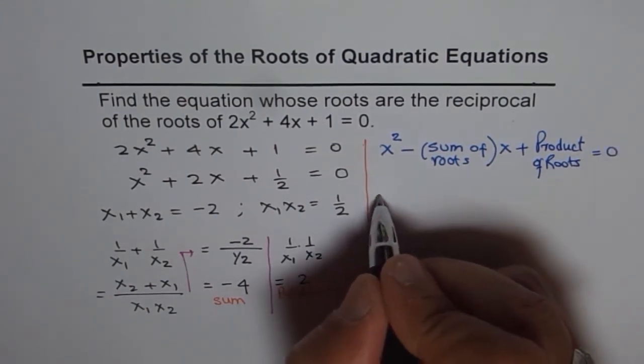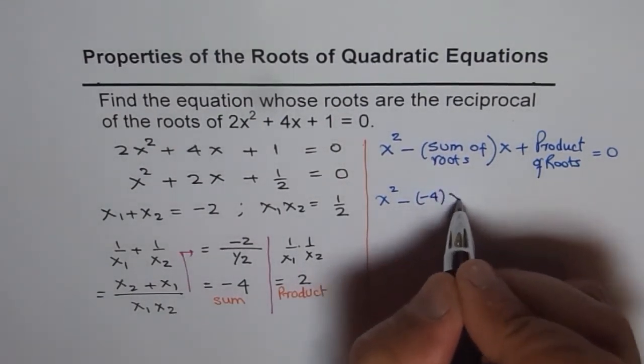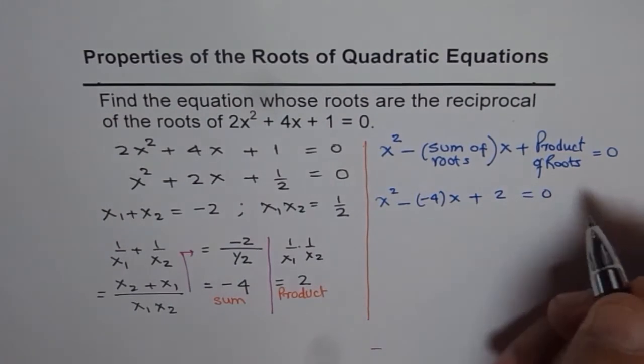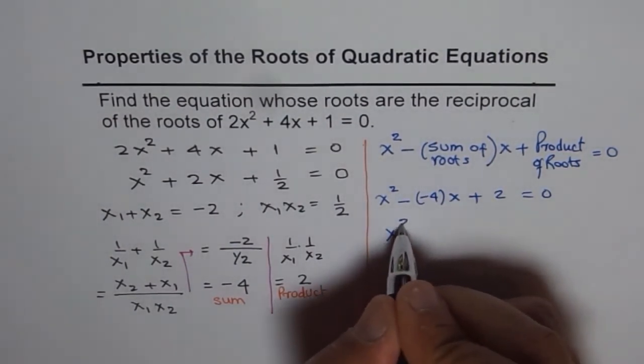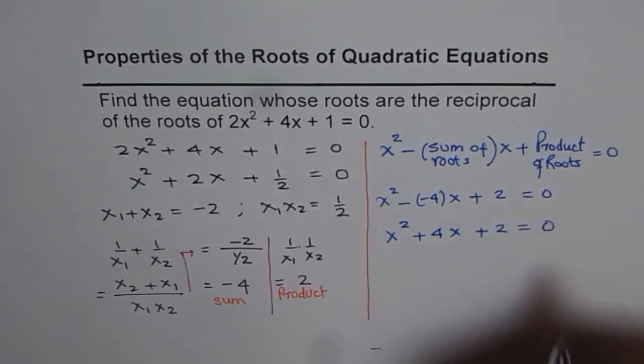So we get x² minus sum is -4, so -(-4)x plus product is 2, equals to 0. So we get our final equation as x² + 4x + 2 = 0.